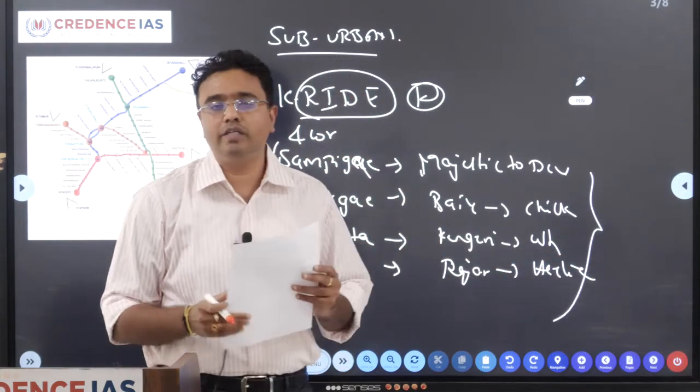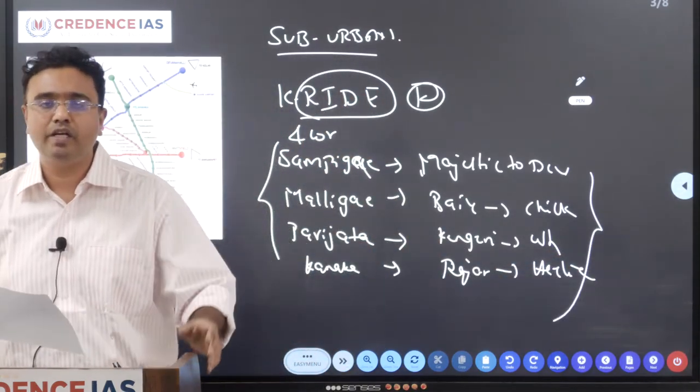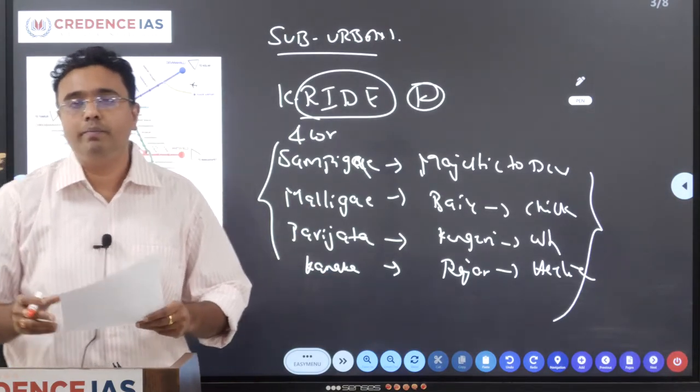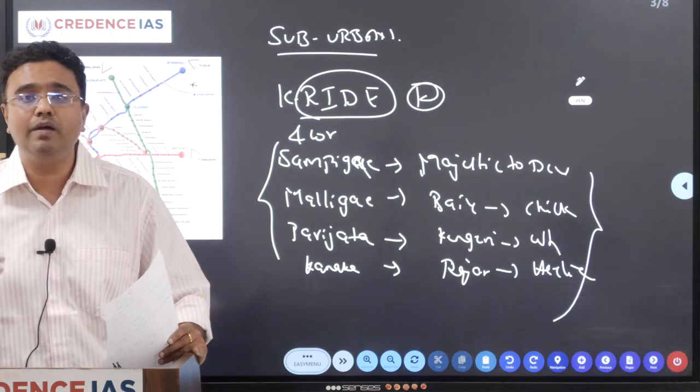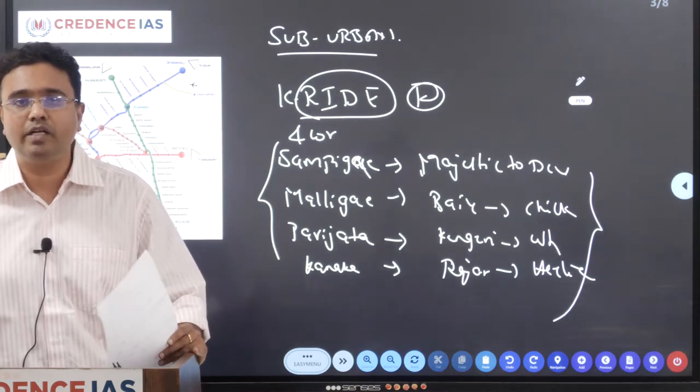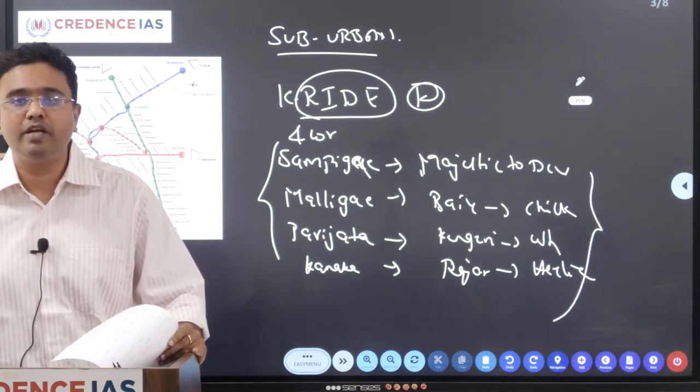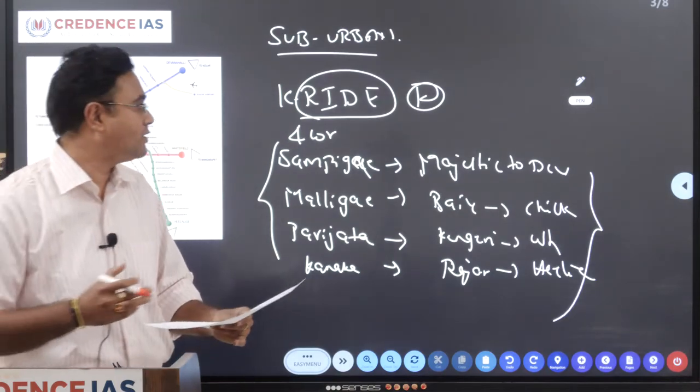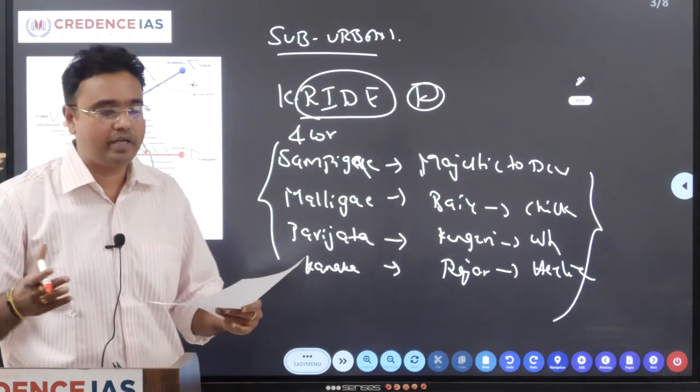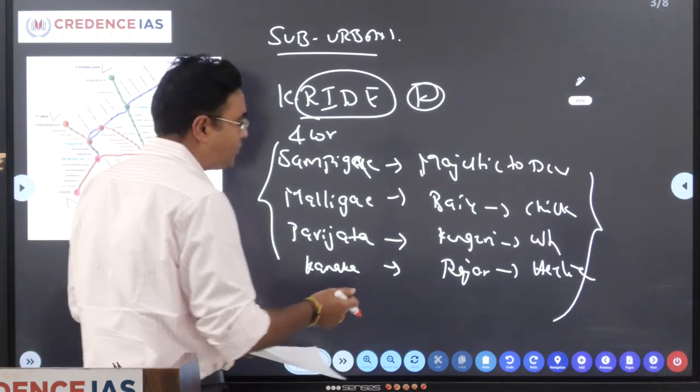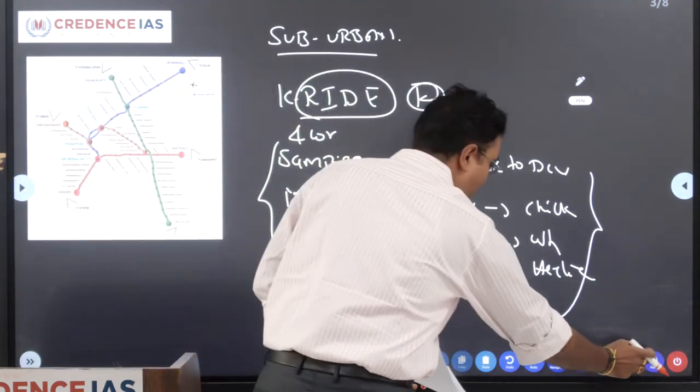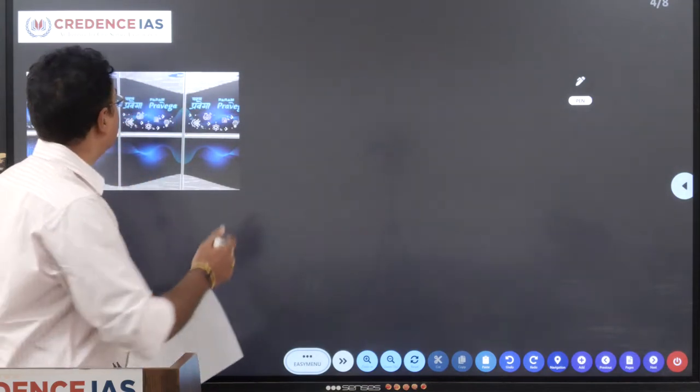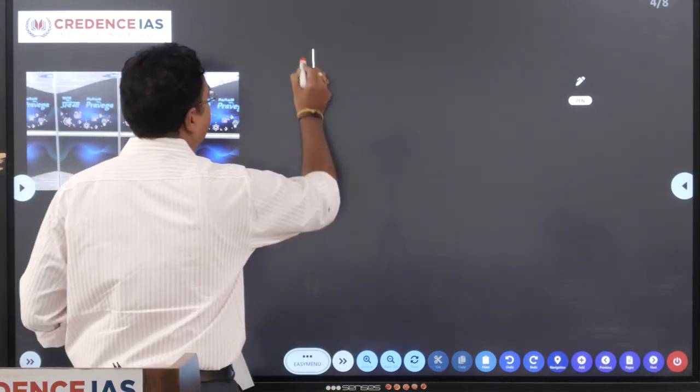Once implemented, this will enhance the transportation and also make that mode of transport very easy and efficient. And also it leads to decongestion of urban areas, that is Bangalore to the periphery areas. So now let's move to the next important topic with regard to Karnataka current affairs, that is Param Pravega.